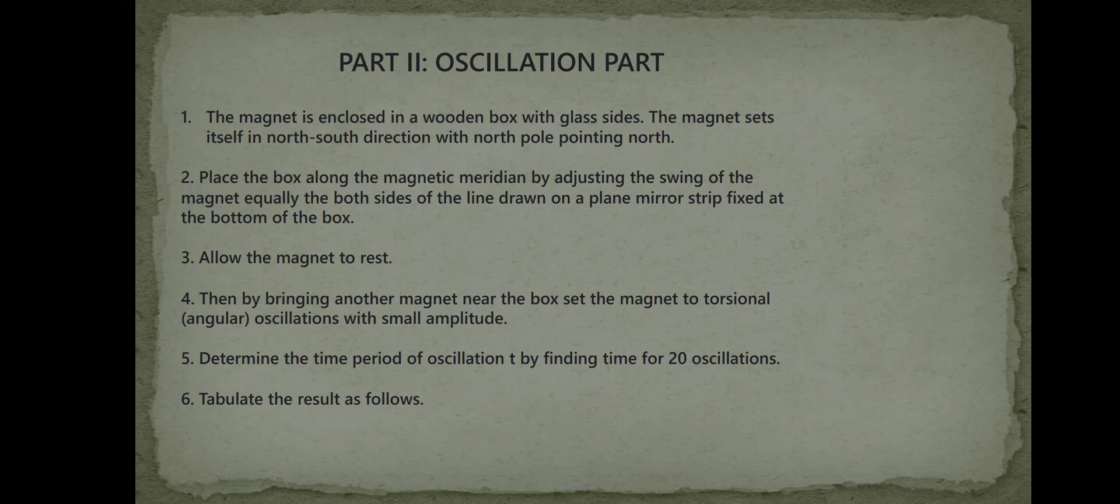The oscillation part. The magnet is enclosed in a wooden box with glass slides. The magnet sets itself in north-south direction with north pole pointing north. Place the box along the magnetic meridian by adjusting the swing of the magnet equally on both sides of the line drawn on a plane mirror strip fixed at the bottom of the box. Allow the magnet to rest.